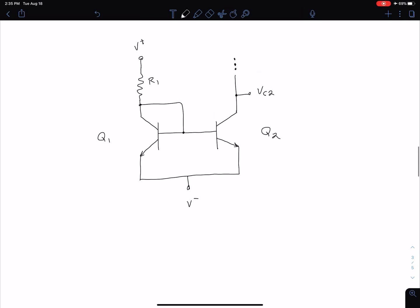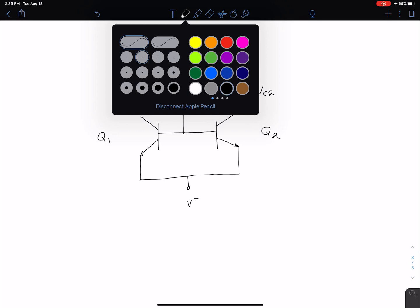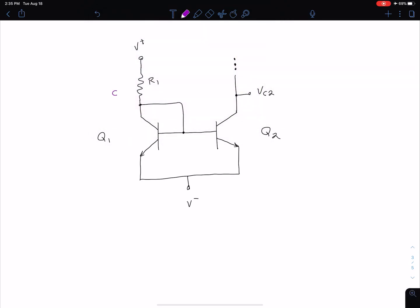Now we want to come back here. We talked about typically wanting these transistors to be operating in the forward active mode because that is the mode where we know very clearly what our current and voltage relationships are. Let's label some voltages to facilitate that discussion. Looking at Q1 first, we have our base, our collector, and our emitter.